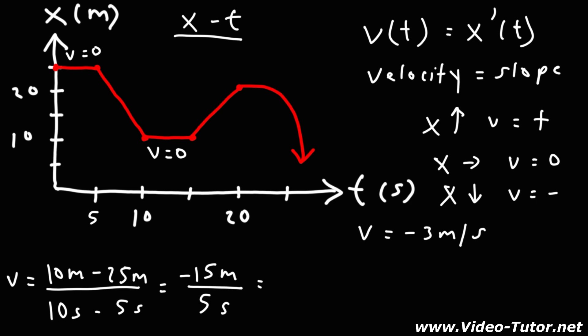Because it's a straight line, the velocity is going to be constant during that segment. But if it wasn't a straight line, what we would have is the average velocity. In order to calculate the instantaneous velocity, we need to determine the slope of the tangent line.